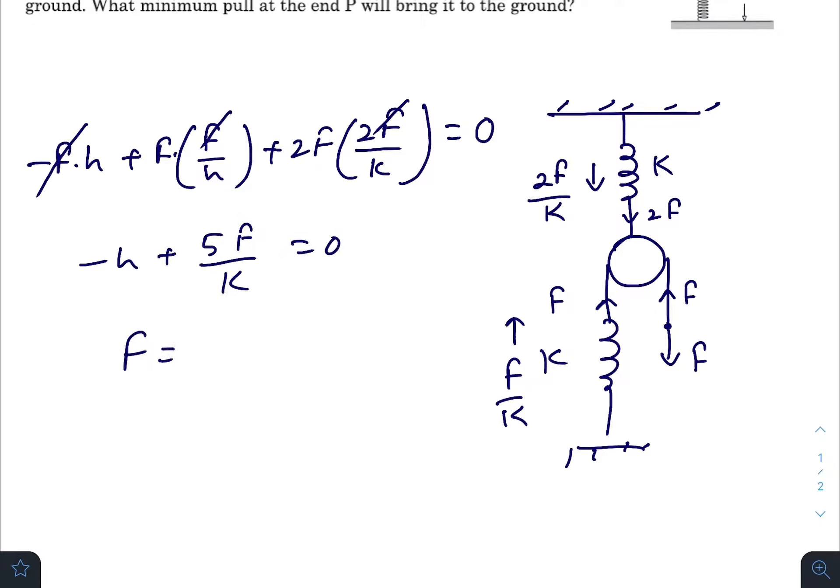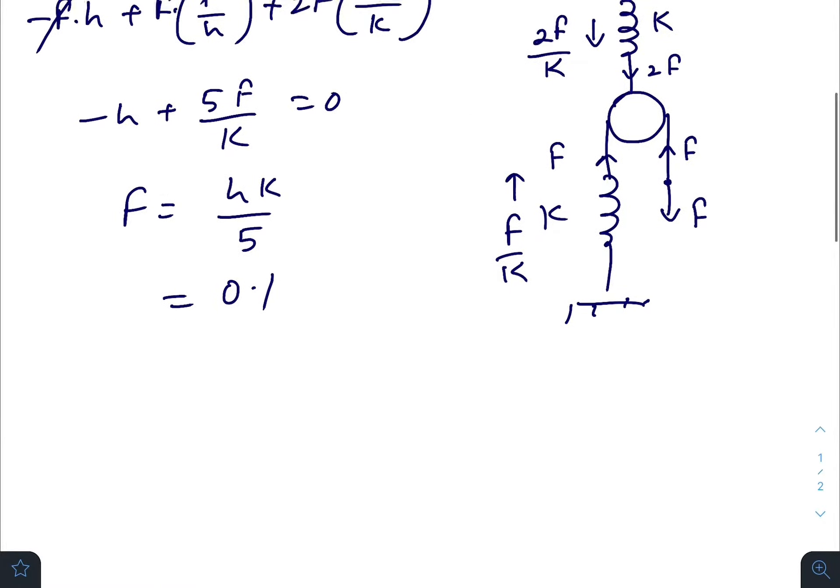equals to zero. So F will be hk by 5. Just put the values: h is 10 centimeters, that is 0.1 meter, k is 500, divided by 5, so 100 into 0.1 equals 10 newton.